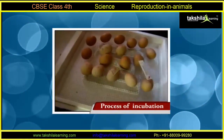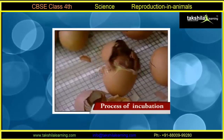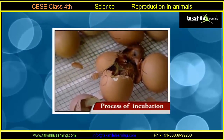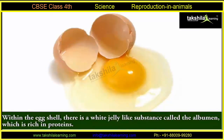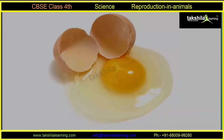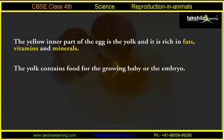Here you can see a video showing the process of incubation. If you carefully notice, an egg has a thin protective shell called the egg shell. Within the egg shell, there is a white jelly-like substance called the albumen, which is rich in proteins. The yellow inner part of the egg is the yolk, and it is rich in fats, vitamins, and minerals. The yolk contains food for the growing baby, or the embryo, and it is this embryo that develops into a chick.